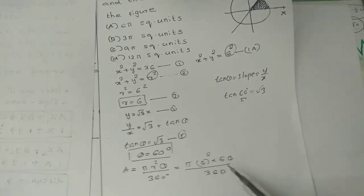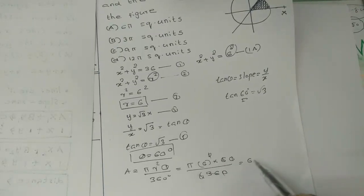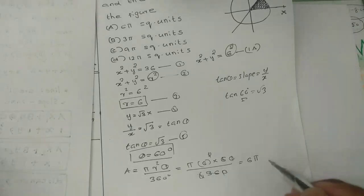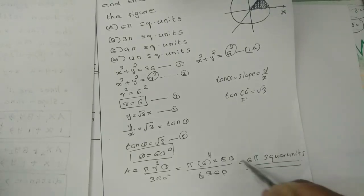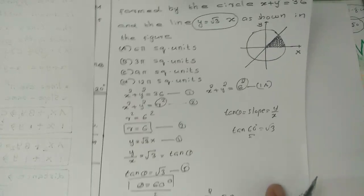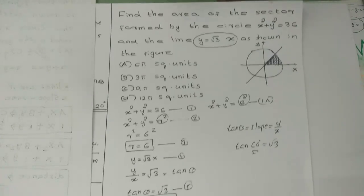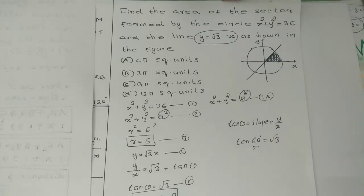The area of the sector equals (theta divided by 2pi) times pi r² equals (pi/3 divided by 2pi) times pi times 36, which gives 6 pi square units. I'll see you in the next video. Bye-bye.